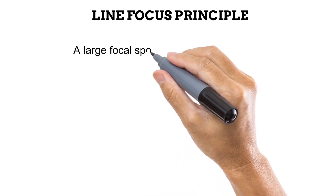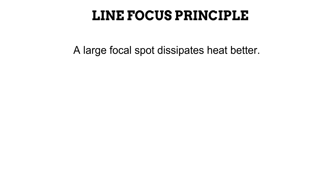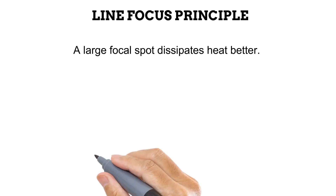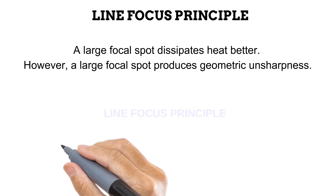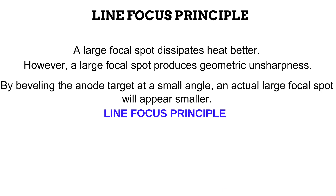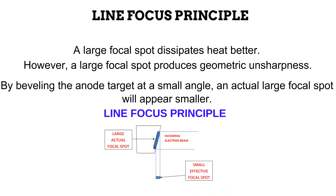Manufacturers didn't stop at using more resistant alloys to protect anodes from heat damage. Further research showed that the larger the focal spot, the greater the amount of heat spread out or dissipated, because a large focal spot provides a greater surface area for spreading the heat out. Instead of concentrating great heat in one small area, the heat spreads out and is less likely to damage the tube. However, using a large focal spot has its problems — it would produce images with geometric unsharpness. To solve this dilemma, the line focus principle was introduced. The line focus principle teaches us that by slanting or tilting the anode target at a small angle, a focal spot that is actually large will appear smaller and produce images without geometric unsharpness. By simply tilting the target, we can use a large focal spot for heat dissipation, but still have images of good quality because the large focal spot appears small.